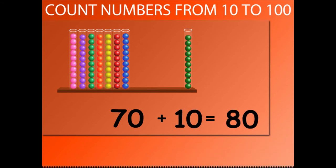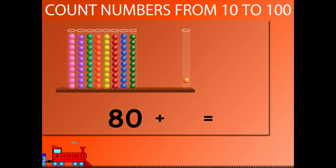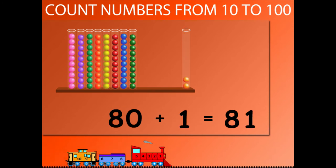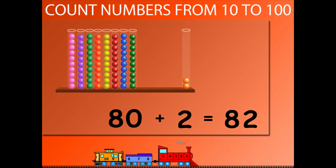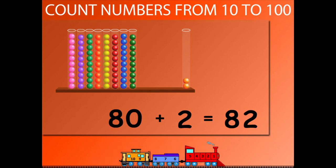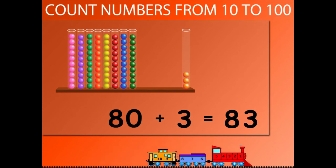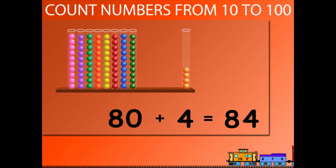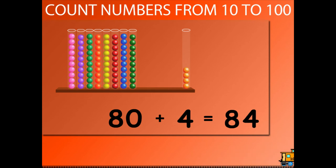70 plus 10 is equal to 80. 80 plus 1 is equal to 81. 80 plus 2 is equal to 82. 80 plus 3 is equal to 83. 80 plus 4 is equal to 84.